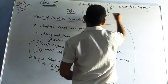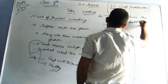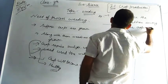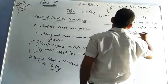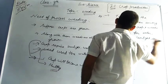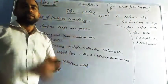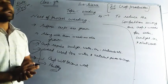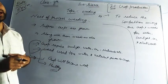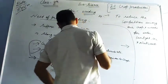So what is the need for the process of weeding? The answer is: to reduce the competition among our crop and weeds for water, sunlight, CO2, and nutrients. When we remove the weeds, our crop will get the complete nutrients that we are providing. So competition will be reduced and the crop grows well.